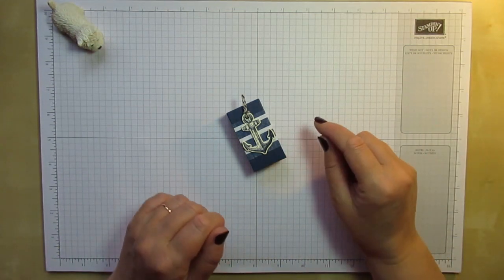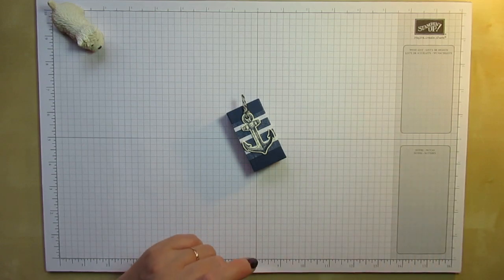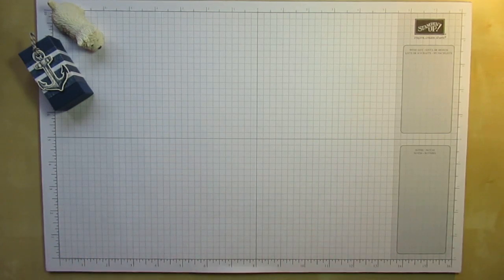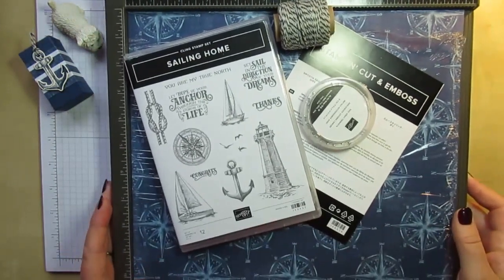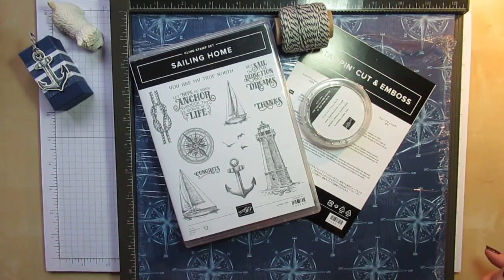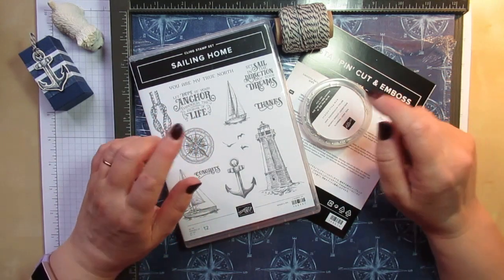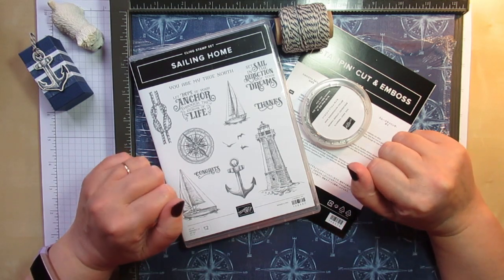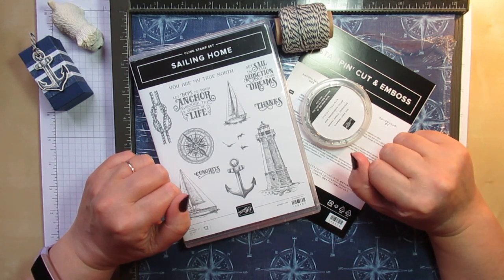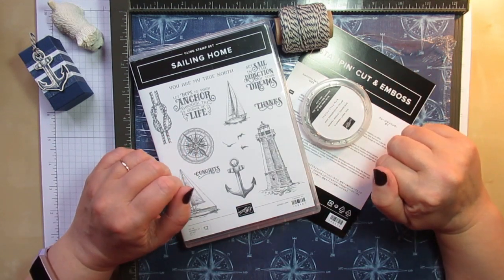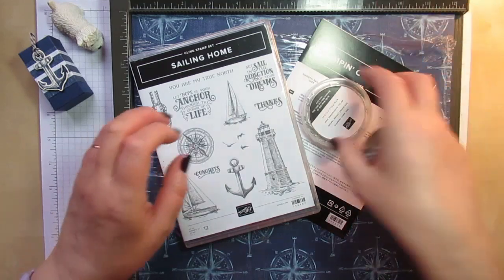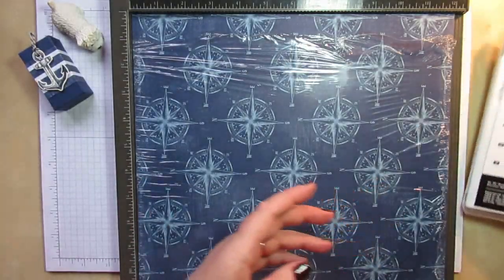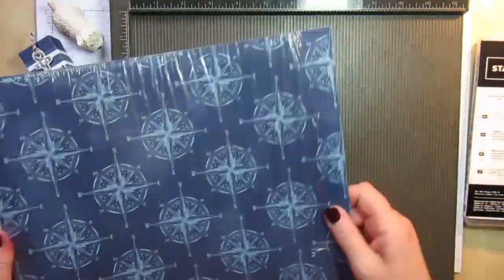This is using the Come Sail Away suite. I'll show you some of the bits I've got from the suite. I don't have the whole suite, and the only reason I didn't order the whole suite was because I got the stamp set and the trinkets that match on stage. So I've still got a couple of things to get. Let me show you the gorgeous designer series paper.